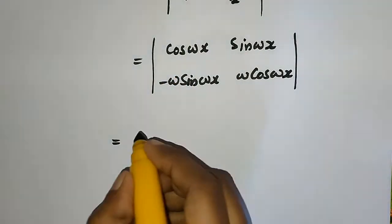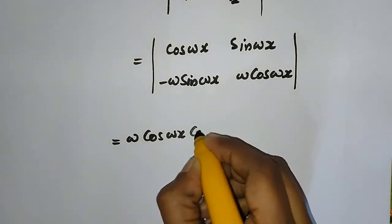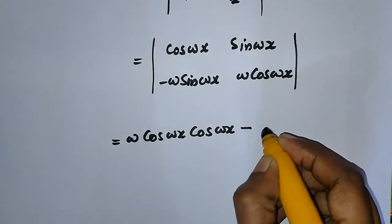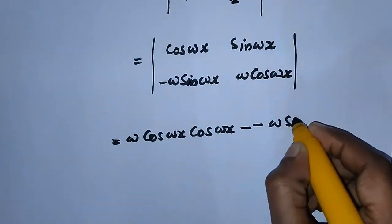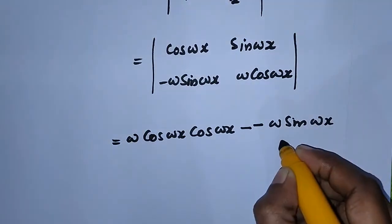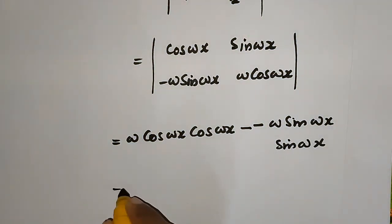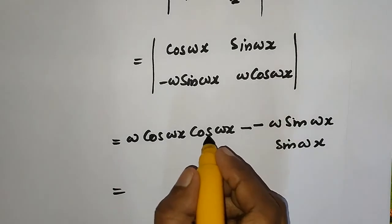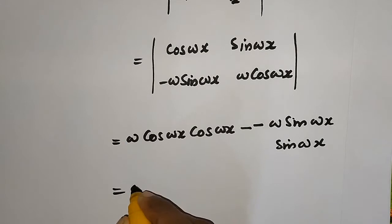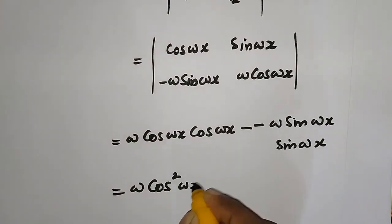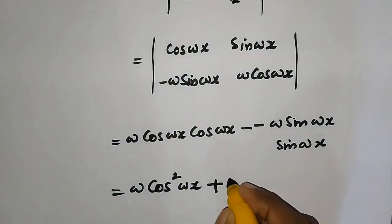The determinant is computed by multiplying diagonally: ω·cos(ωx)·cos(ωx) minus (minus sin(ωx))·(ω·sin(ωx)). The minus of minus gives a plus, so we get ω·cos²(ωx) plus ω·sin²(ωx).